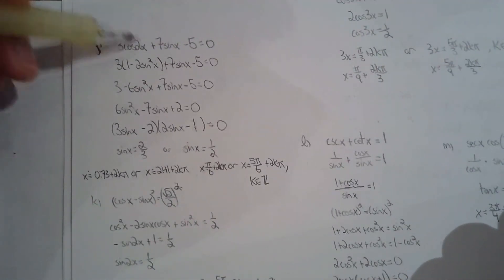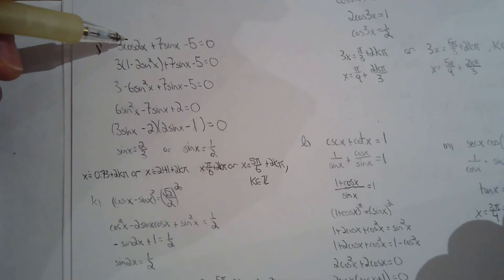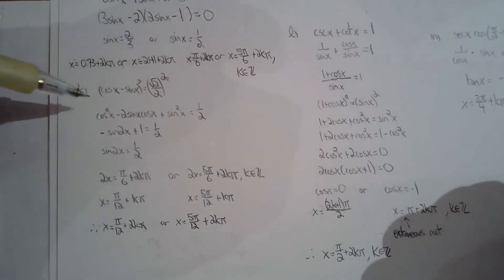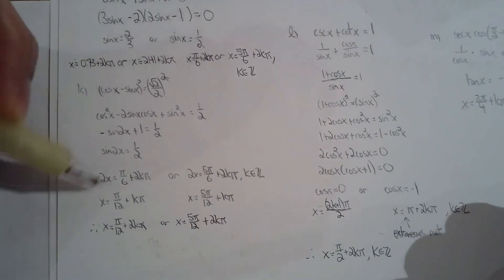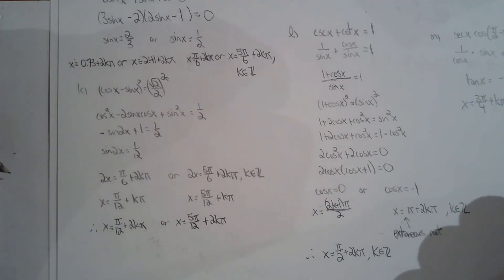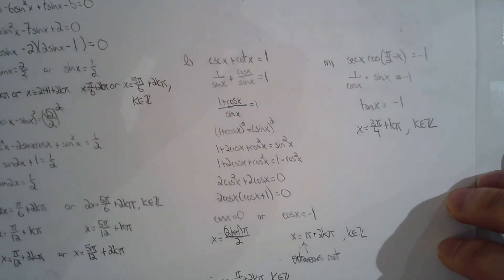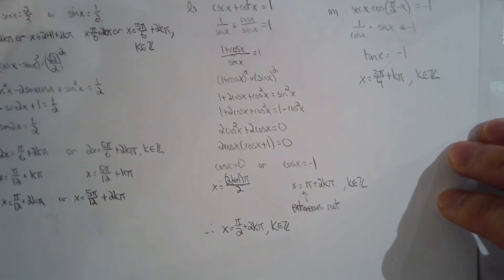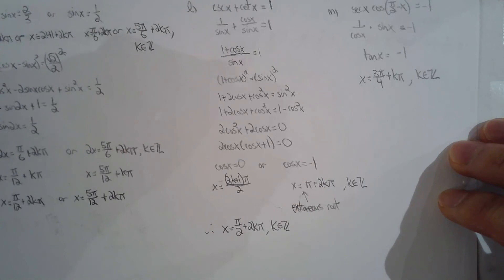4j — double angle formula. But then you get something like a quadratic. Those identities you have to memorize. For 4k — square both sides, so be careful. You're going to introduce extraneous roots. You can check these two, but they should check out. For 4l — square both sides again, simplify and square both sides. It's a very powerful technique, but just be very careful because you will introduce extraneous roots.